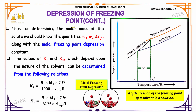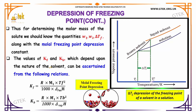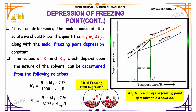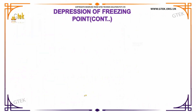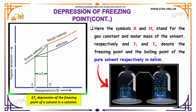To determine the molar mass of the solute, we need to know the quantities w₁, w₂, and ΔTf, along with the molal freezing point depression constant Kf. The values of Kf and Kb, which depend on the nature of the solvent, can be ascertained from specific equations: Kf is given by one formula and Kb by another. Here, R and M₁ stand for the gas constant and molar mass of the solvent, while Tf and Tb denote the freezing point and boiling point of the pure solvent in kelvin.